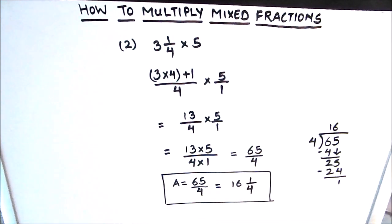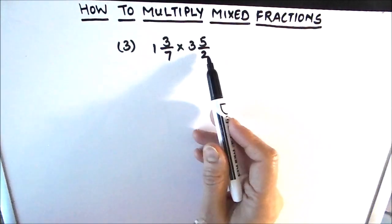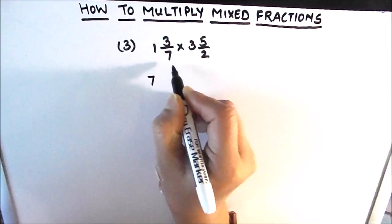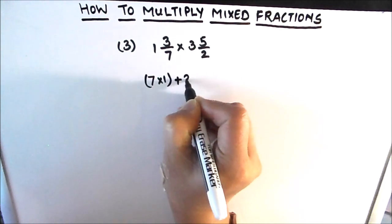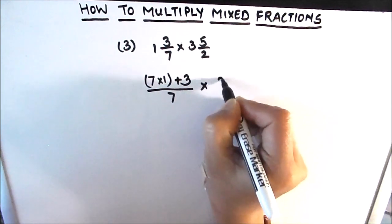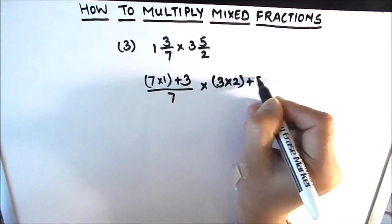We will now move on to our third example, where we multiply two mixed fractions together. Our third example is 1 and 3/7 times 3 and 5/2. Our first step is to convert both mixed fractions into improper fractions: that's 7 times 1 plus 3, divided by 7, times 3 times 2 plus 5, divided by 2.